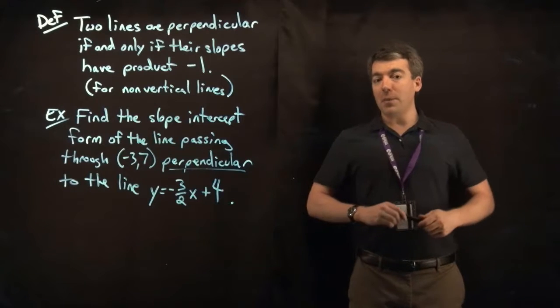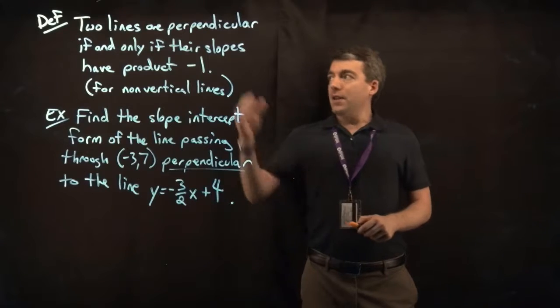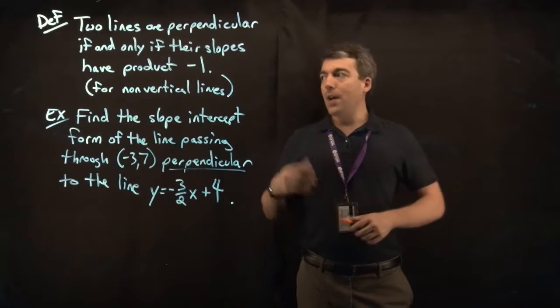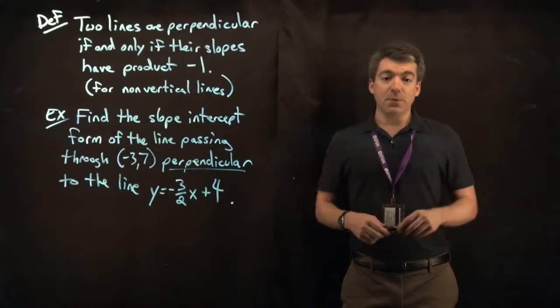All right, now let's talk about perpendicular lines. The definition of perpendicular is that two lines are perpendicular if and only if their slopes have product negative 1, that is they are negative reciprocals of each other.